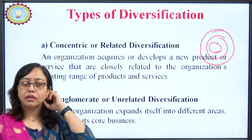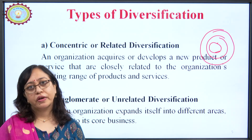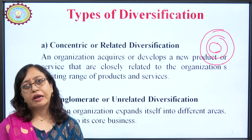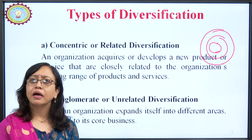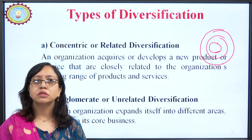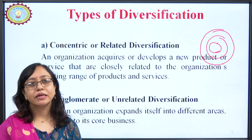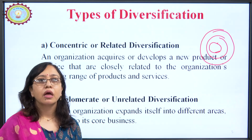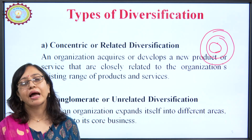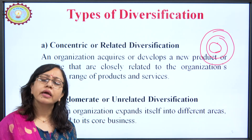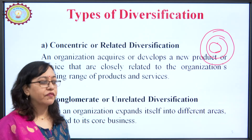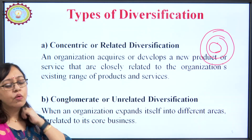Similarly, the Tata Group of Companies — which I also referenced in the last lecture — is into salt, tea leaves, hotels, telecommunications, aviation, automobiles, heavy vehicles, light vehicles, and commercial vehicles. So it is into so many types of businesses — this is again a conglomerate type of diversification or unrelated diversification.